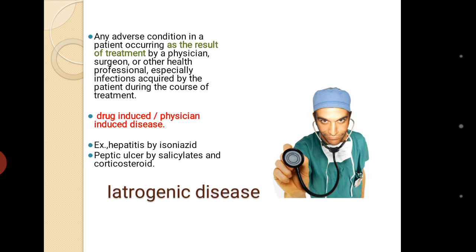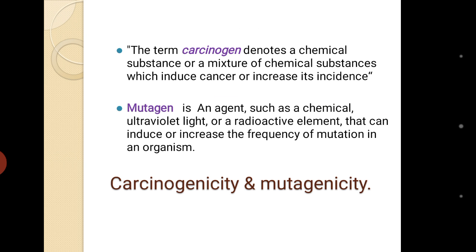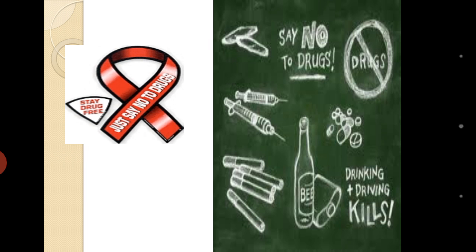Iatrogenic disease is a drug-induced or physician-induced disease — any adverse condition in a patient occurring as the result of treatment by a physician, surgeon, or healthcare professional. Examples: hepatitis caused by isoniazid (used in tuberculosis); peptic ulcer induced by salicylates (aspirin) or corticosteroids. Carcinogenicity and mutagenicity: a carcinogen is a chemical substance that induces cancer or increases its incidence; a mutagen increases the frequency of mutations in an organism.